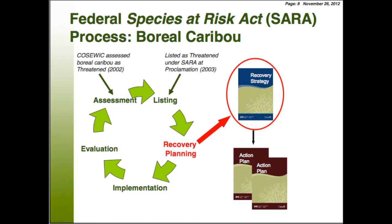Then we go into the recovery planning stage, which is where we developed this recovery strategy for boreal caribou, and then move into developing action plans. One likely scenario is that one action plan is developed for every jurisdiction, so every province and territory would have their own action plan. Then we go into the implementation phase, where we develop range plans and action plans and start doing on-the-ground work to try to recover boreal caribou. Then there's evaluation of how recovery efforts are working.